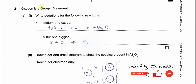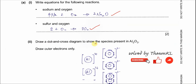Question 2A, part 1: write equations for the following reactions. Sodium and oxygen form sodium oxide, Na₂O — balance it accordingly. For sulfur and oxygen, you form sulfur dioxide, SO₂. Try not to give sulfur trioxide, SO₃, because when sulfur burns it always forms SO₂. SO₃ is only formed when there is a catalyst, like in the contact process.